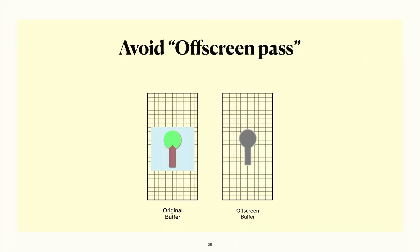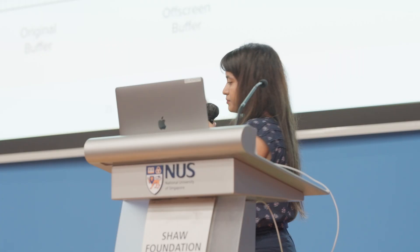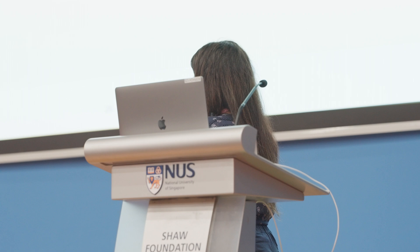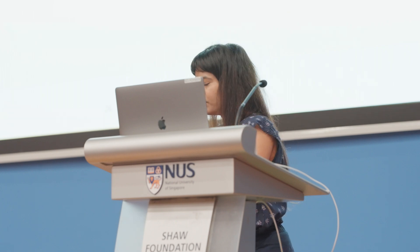To summarize: because of the shadow, we had to incur an off-screen pass, and we'd very much like to avoid that. In a real-life application, you may have many shadows on screen — even a shadow on every single collection view cell — and you'll incur as many off-screen passes as there are shadows. This can really build up and get worse. We want to ensure we can avoid as many off-screen passes as possible.